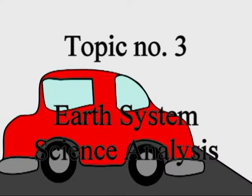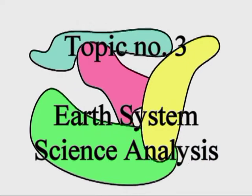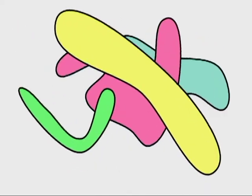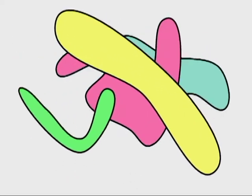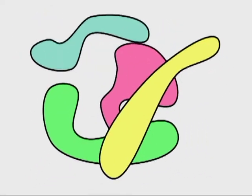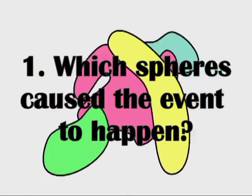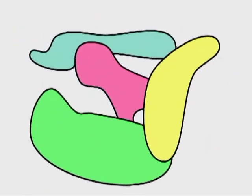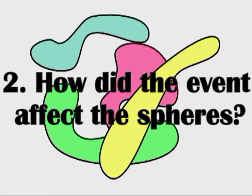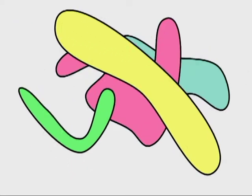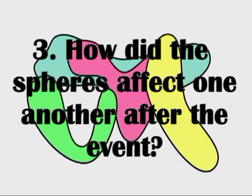The third and final thing we're going to learn about today is Earth System Science Analysis. So, let's say there was an event. The first thing Earth System Science analysis would ask is how many spheres were involved in causing the event. The second thing they would ask is how did the event affect the spheres. The third question they would ask is how did the other spheres interact with one another as a result.